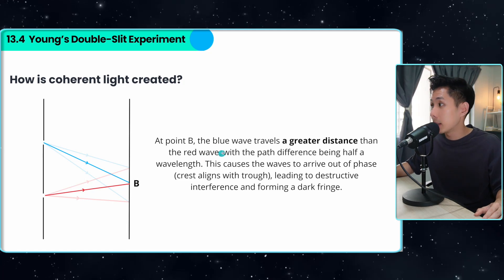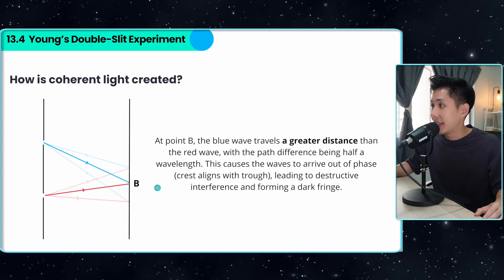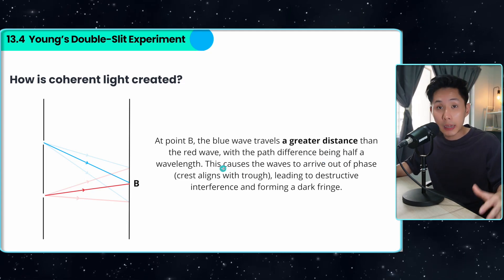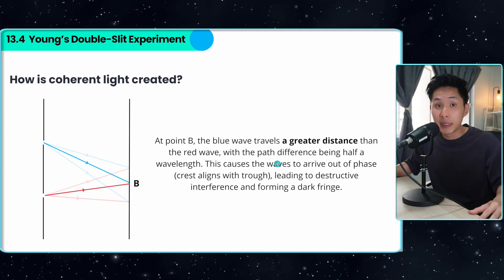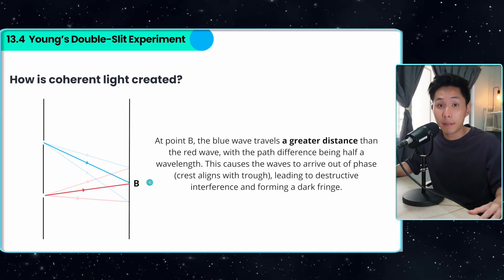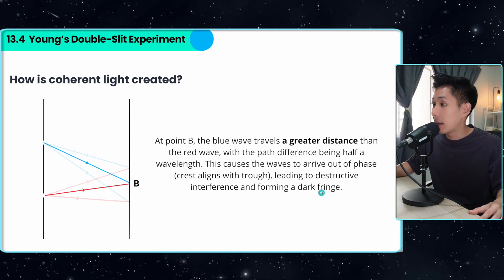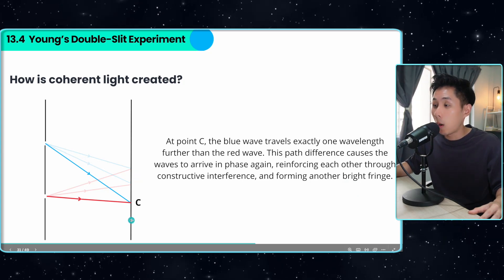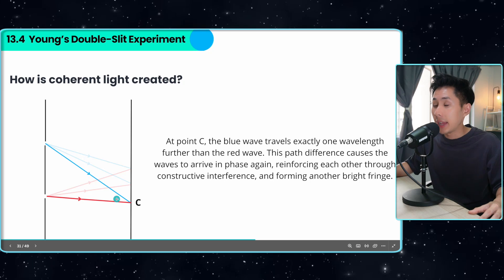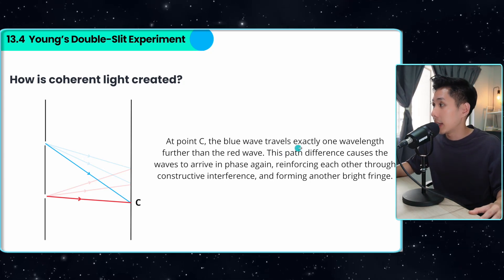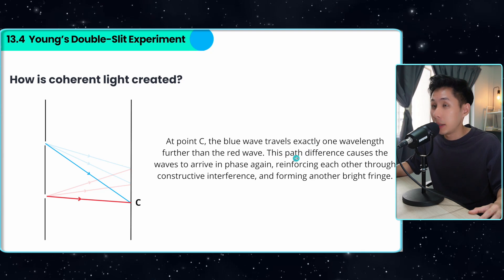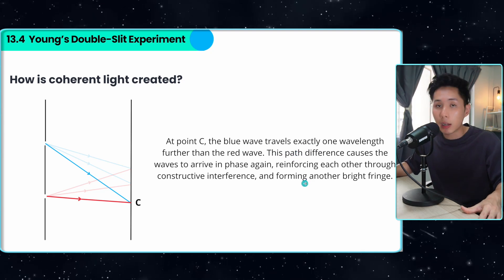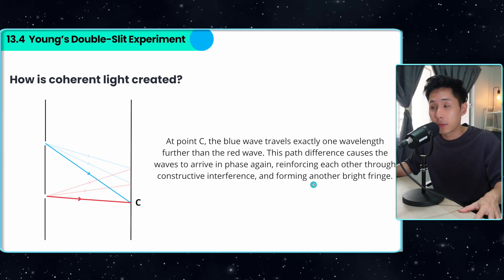At point B, the blue wave travels a greater distance than the red wave, with the path difference being half a wavelength. When the path difference is half a wavelength, destructive interference happens — that's why you have a dark fringe. At point C, the blue wave is traveling exactly one wavelength further, so the path difference is a whole number again, giving constructive interference and forming a bright fringe.